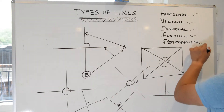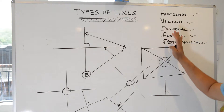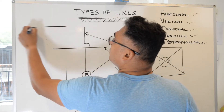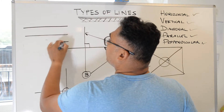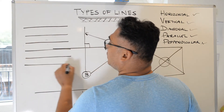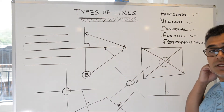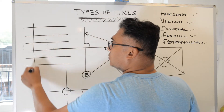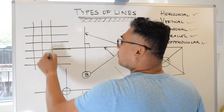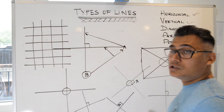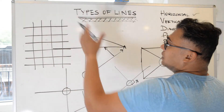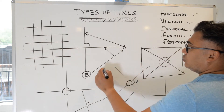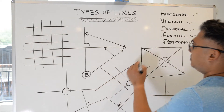So there you have it — the five types of lines we looked at today. We had horizontal lines: lines moving from left to right, right to left, east to west. Vertical lines are lines that run from north to south or from south to north — upwards or downwards, however you decide to describe it.